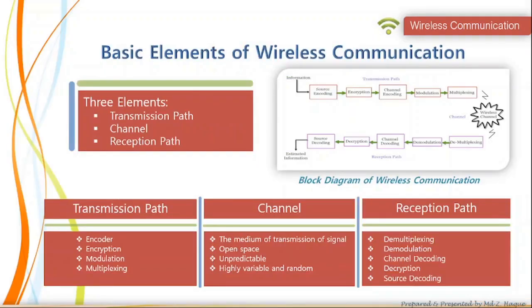A wireless communication system can be divided into three elements: transmission path, channel, and reception path. The transmission path consists of encoder, encryption, modulation, and multiplexing. The channel in wireless communication is the medium of transmission of the signal; it uses open space for transmission. A wireless channel is unpredictable, highly variable, and random in nature. The reception path comprises demultiplexing, demodulation, channel decoding, decryption, and source decoding.